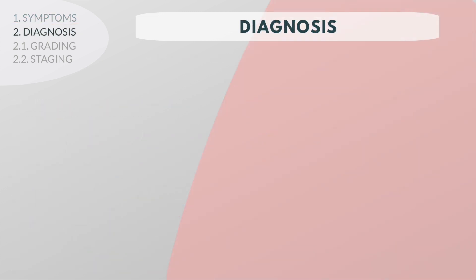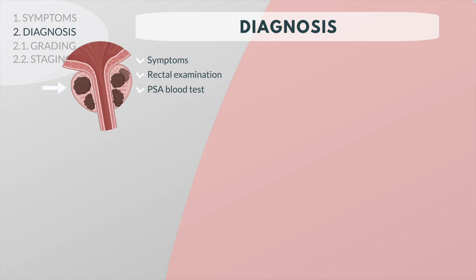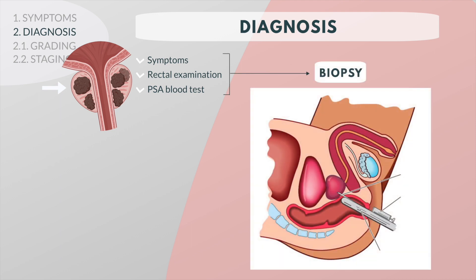Prostate cancer is usually suspected based on the symptoms, the results of a digital rectal examination, or the results of the PSA blood tests. Sometimes stony hard indurations or nodules are palpable during a rectal examination, but the examination is most often normal.